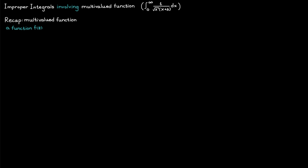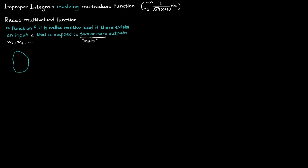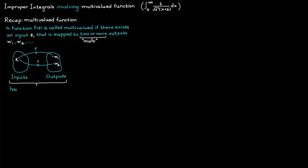A function is called multivalued if there exists an input value that is mapped to two or more output values. An example of this sort of mapping is illustrated in the figure below. Here we can see that the input value C1 is mapped to both W1 and W2. And this is a big problem when doing integration, because it's kind of hard to integrate something that can be two or more values at the same time.